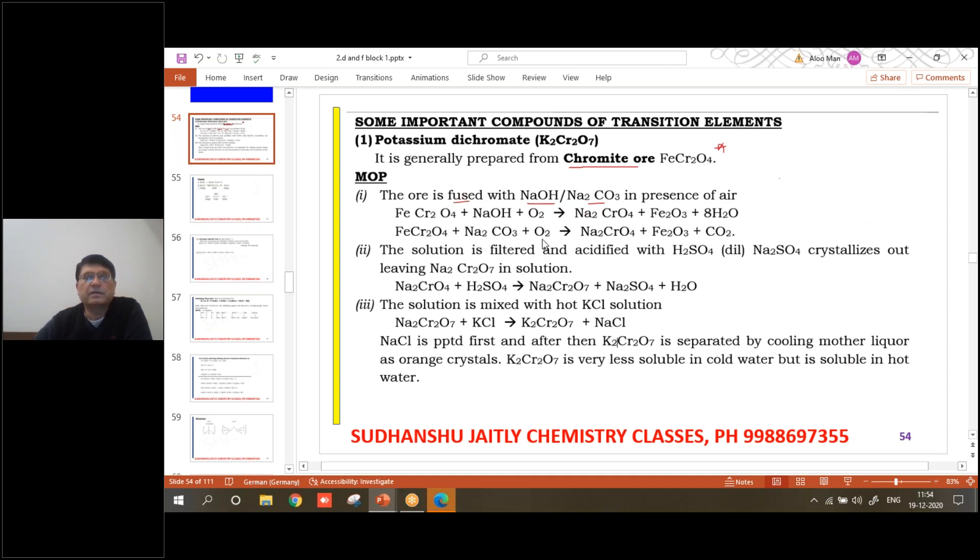FeCr2O4 chromite ore plus NaOH plus oxygen forms sodium chromate Na2CrO4 plus Fe2O3 plus water. Or if you put sodium carbonate, everything remaining same, only the difference is carbon dioxide. The first step. The solution containing sodium chromate is filtered and we add dilute sulfuric acid. This is going to precipitate sodium sulfate, leaving sodium dichromate Na2Cr2O7 in the solution. The third step - the sodium dichromate solution is now mixed with hot potassium chloride. The displacement reaction happens. You will be getting potassium dichromate K2Cr2O7.